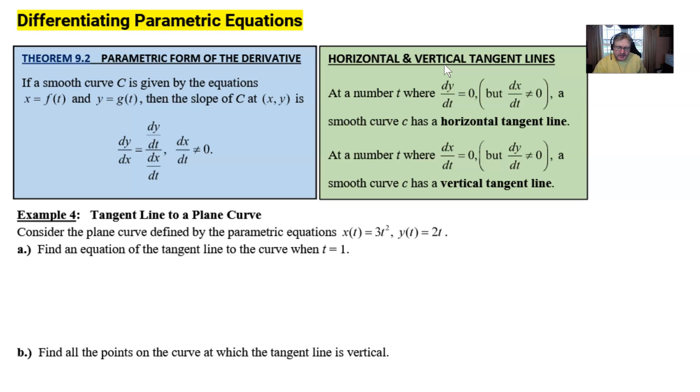We're asked to consider the plane curve defined by the parametric equations x(t) = 3t², y(t) = 2t. And we're given the directive to find the equation of the tangent line to this curve when t is equal to 1.